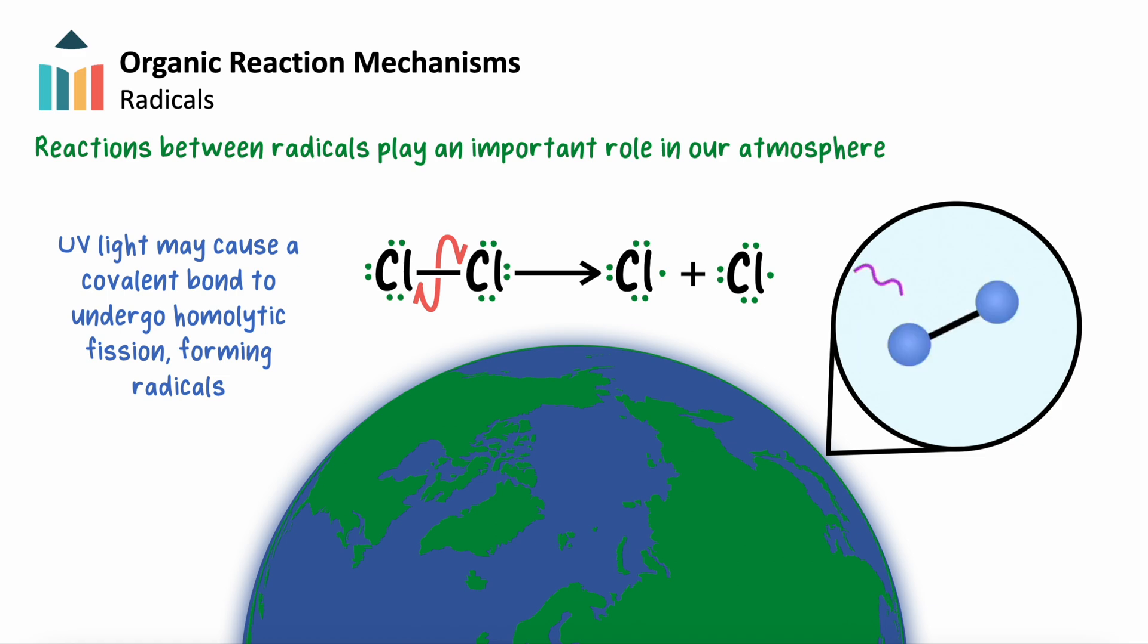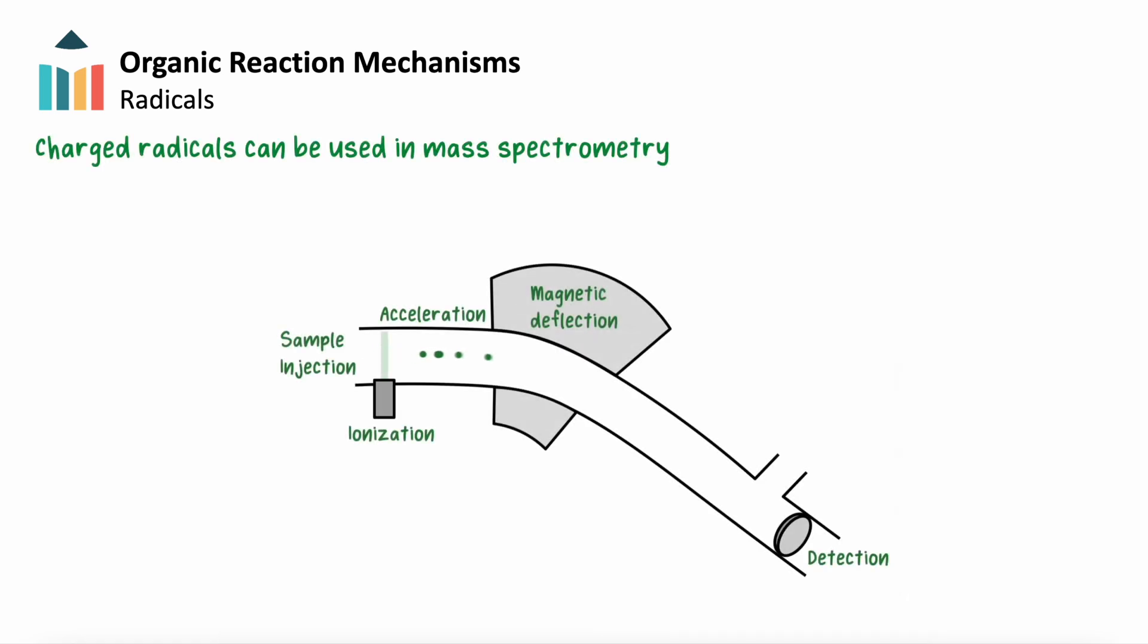But radicals can also hold charge, and we see the importance of this in the context of mass spectrometry. Positive radical cations, for example, are formed when an electron is removed from a neutral molecule during the ionization step of this process.